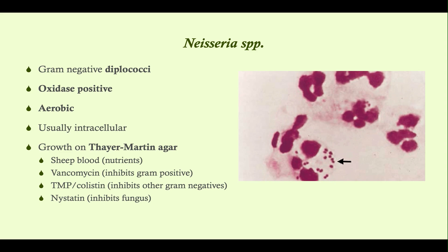All Neisseria are oxidase positive — put that in your back pocket and know your oxidase-positive organisms, because there's a particular disease that puts you at risk for oxidase-positive disorders. Neisseria is aerobic and usually intracellular, though various species range from facultative to obligate intracellular. Importantly, Neisseria species grow on Thayer-Martin agar, which is selective for Neisseria — an agar plate enriched with nutrients and antibiotics.